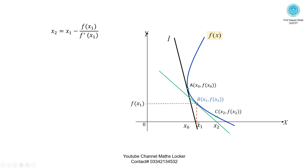Now draw the normal from point x₁ up to the curve — this is point B with coordinates (x₁, f(x₁)). Draw the tangent from this point; it cuts the x-axis at distance x₂ from the origin. So we can write: x₂ = x₁ - f(x₁) / f'(x₁). Repeat the procedure.